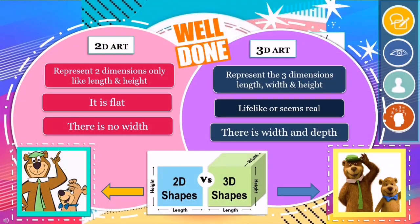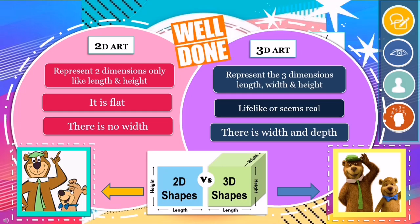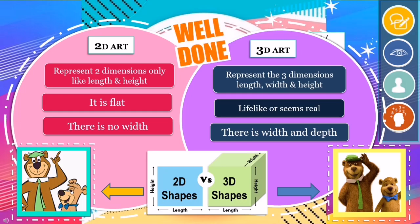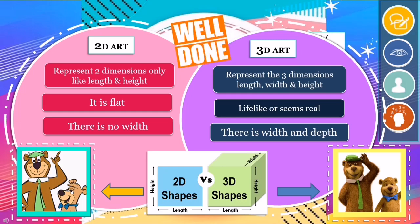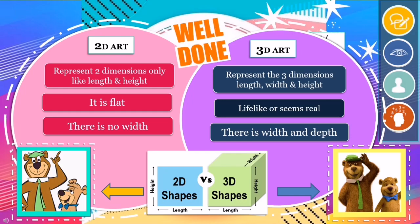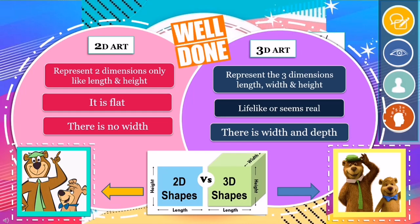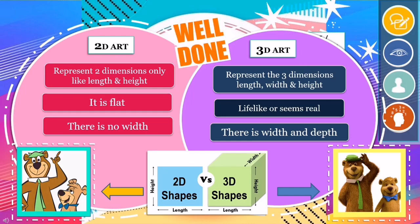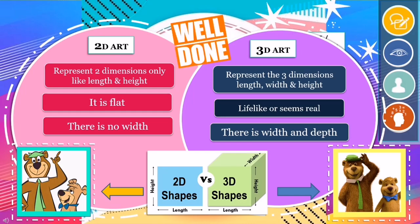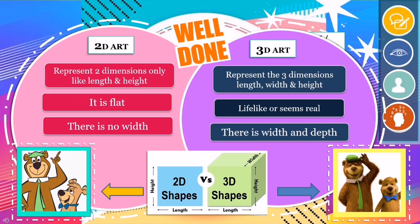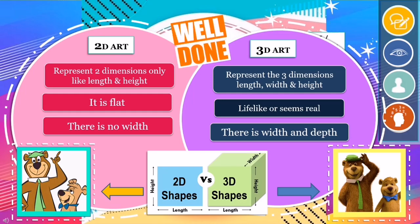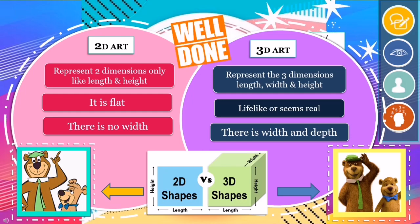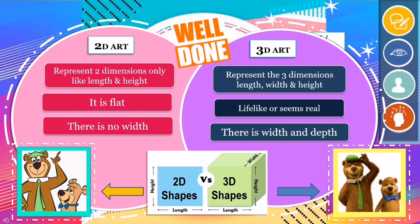Well done! Here are the answers. A 2D art represents 2 dimensions only — like length and height. It is flat, and there is no width. The 3D art represents 3 dimensions: length, width, and height. It is life-like, or seems real, and there is width and depth.